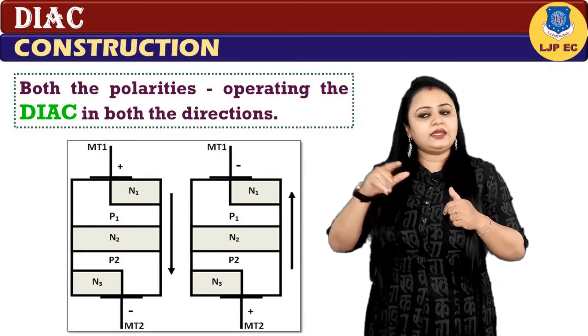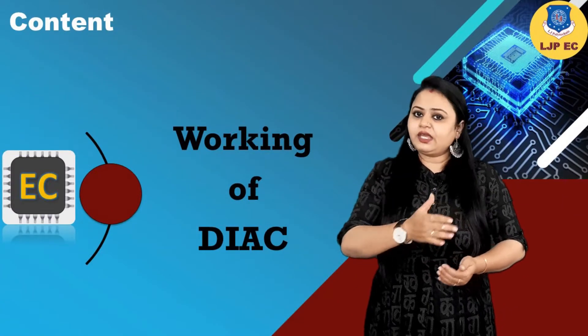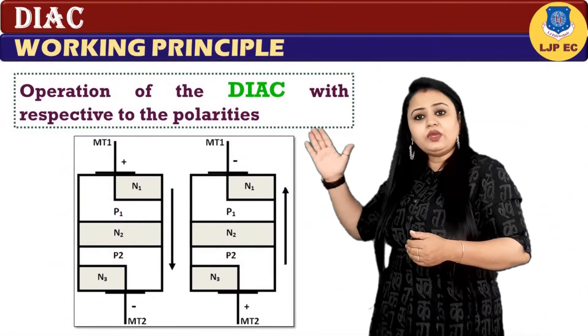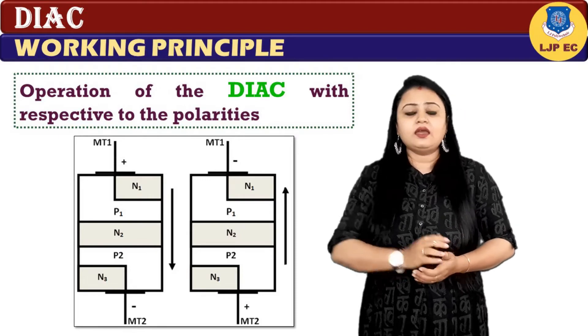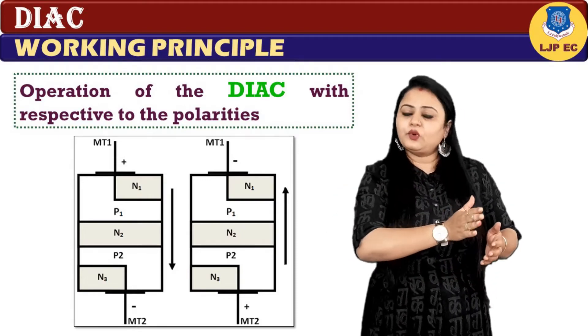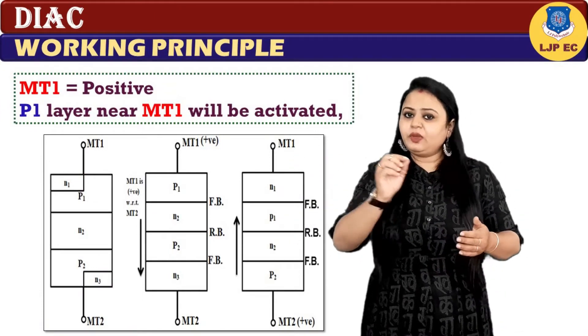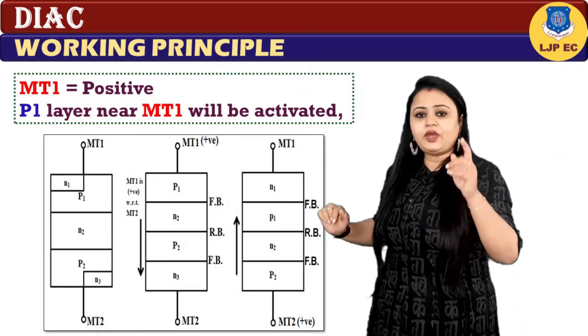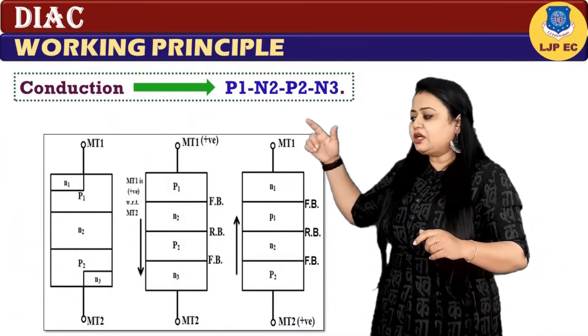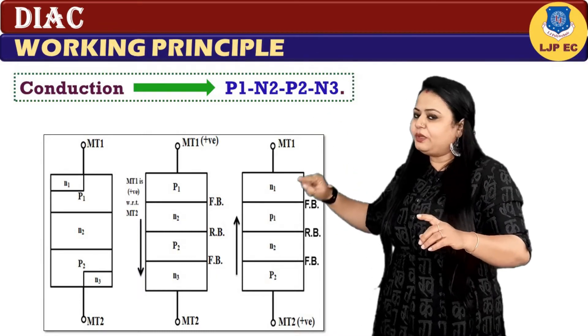Now coming up to the working principle of DIAC, the above images show clear operation of DIAC with respect to the polarities. Consider MT1 terminal to be positive. Then P1 layer near MT1 will be activated, so conduction will take place in the order of P1, N2, P2, N3.